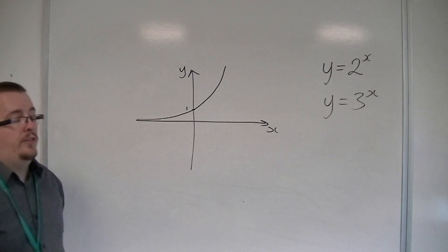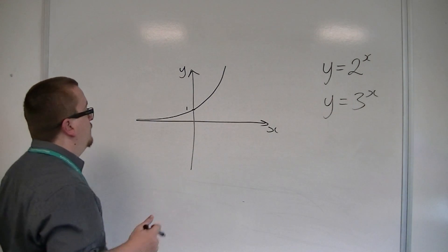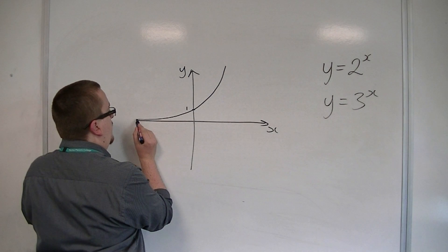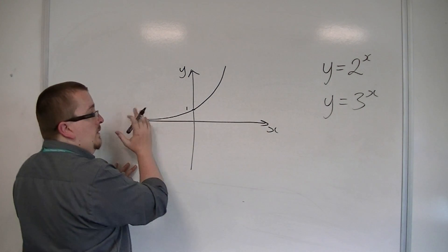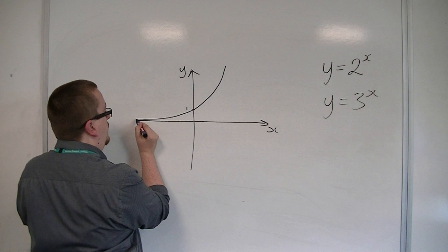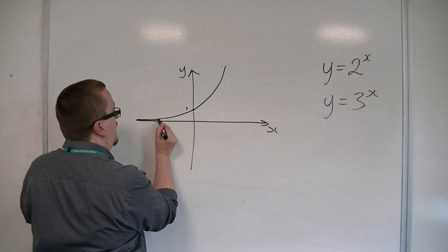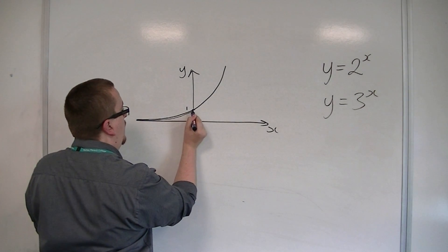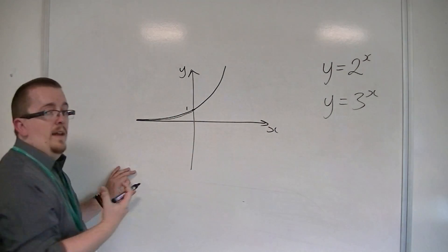If we were looking at y equals 3 to the x, then y equals 3 to the x would be smaller when it is to the left of the y-axis than 2 to the x. But as it passes the y-axis,